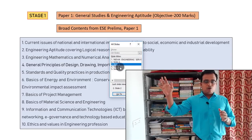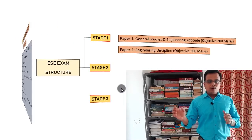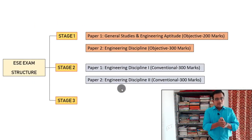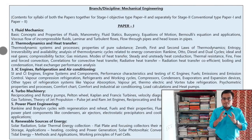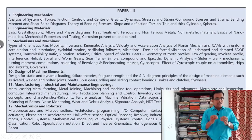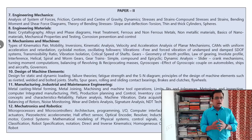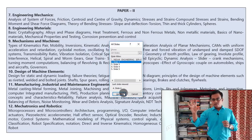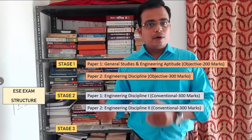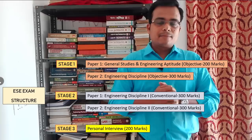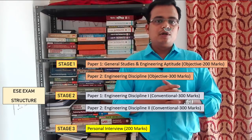In Stage 1, you'll have Paper 1 and Paper 2 as prelims. Stage 2 is completely discipline specific and is a conventional or subjective paper. For mechanical engineering students, Paper 1 covers thermal engineering and fluid mechanics, while Paper 2 covers theory of machines, machine design, and engineering mechanics. If you clear Stage 1, you qualify for Stage 2 mains, and if you clear mains, you get a call for the personal interview — Stage 3.